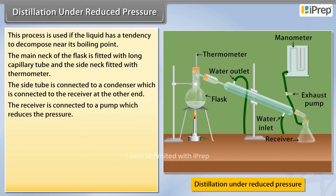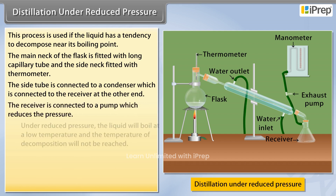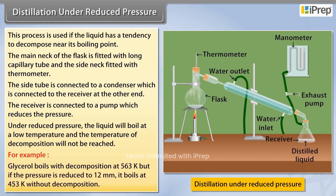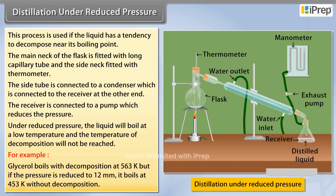The receiver is connected to a pump which reduces the pressure. Under reduced pressure, the liquid will boil at a lower temperature and the temperature of decomposition will not be reached. For example, glycerol boils with decomposition at 563 kelvin, but if the